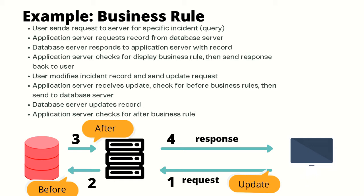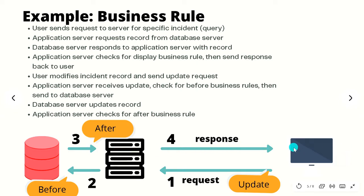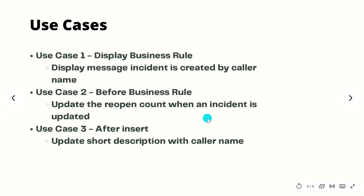The user then modifies the incident record, makes changes, and sends the update request. The application server receives the update and checks for the before business rule. The before business rule is mostly used for validation or performing some action before inserting data into the database. After the database server updates the record, the after business rule runs. So the sequence is: display BR on load, then before BR before the DB write, then after BR once the record is updated, and then the response is sent back to the user.